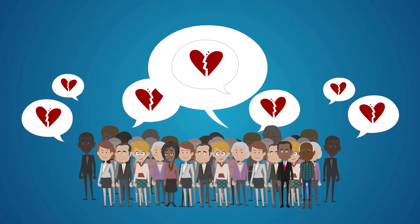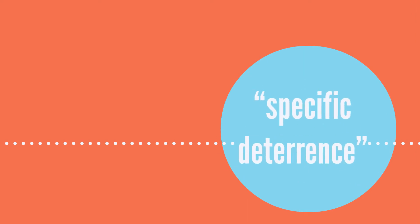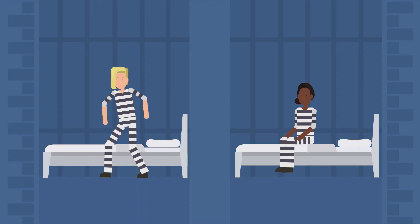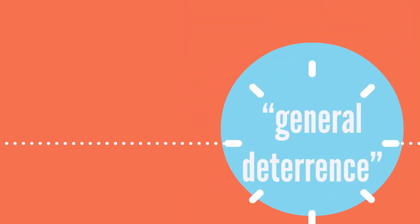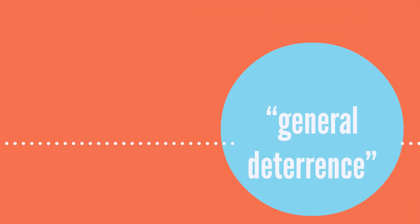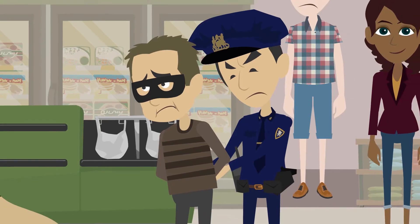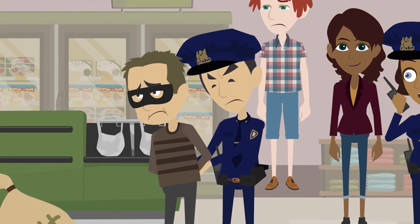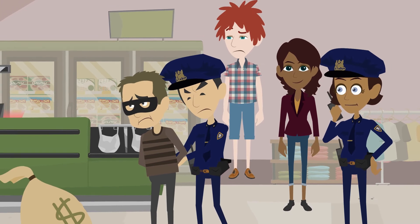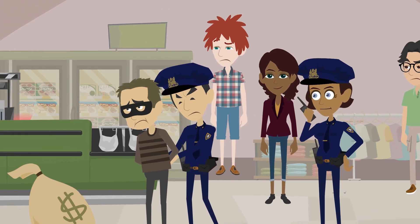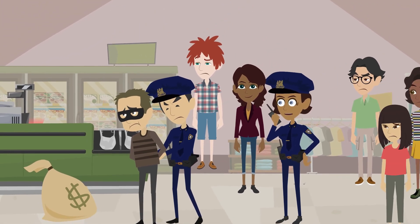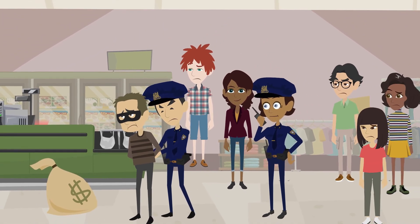Lawyers use the term specific deterrence to refer to punishments intended to discourage that specific criminal from committing that crime again. They use the term general deterrence to refer to punishments that discourage the wider public from committing the crime. In other words, general deterrence is how the justice system could make an example out of someone and send a strong message to anyone else who might consider committing the same crime.